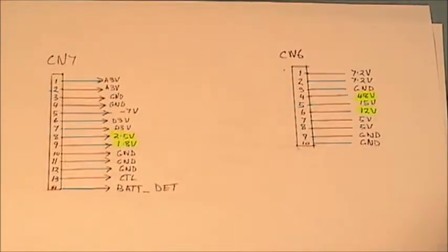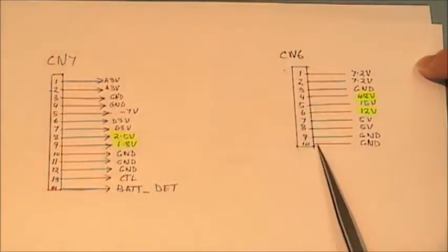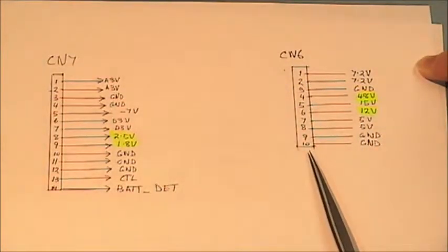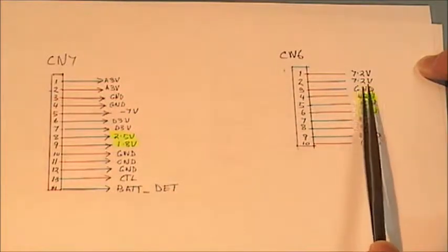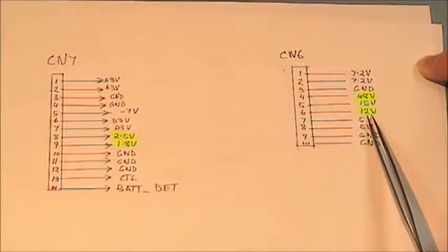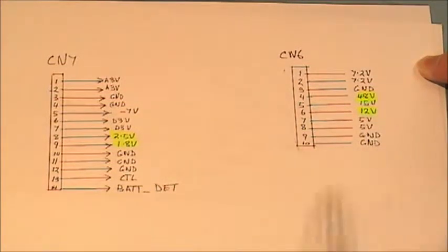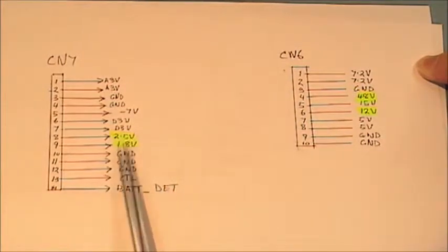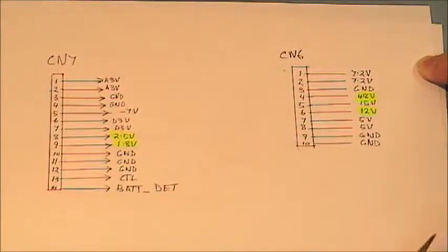Here is a diagram of the pin outs on the connectors of the power supply. I am just showing you these two connectors because this is where I had the problem. On CN6 we have 10 pins and our 48 volt supply, 15 volt supply and 12 volt supply were all missing. And over here on the CN7 connector, our 2.5 volt and 1.8 volt was missing from the CN7 connector.